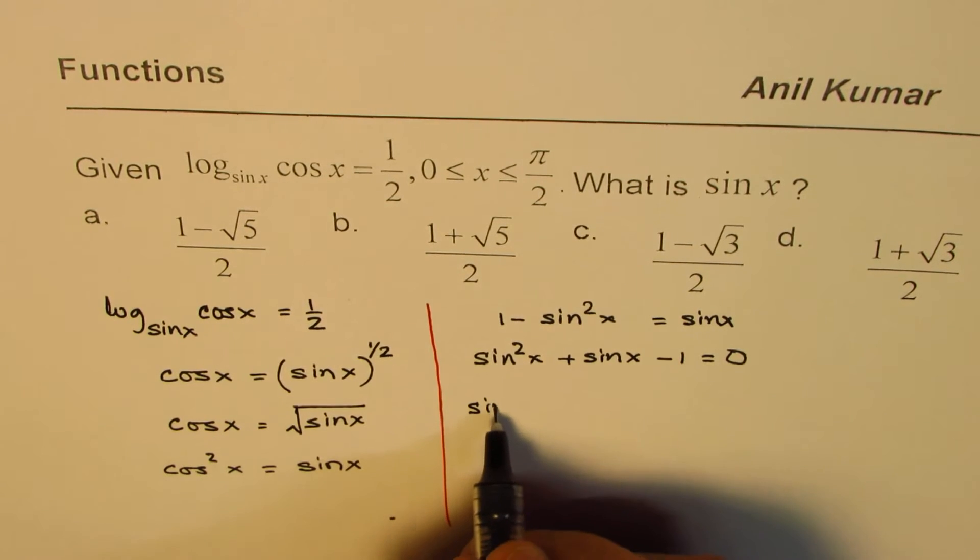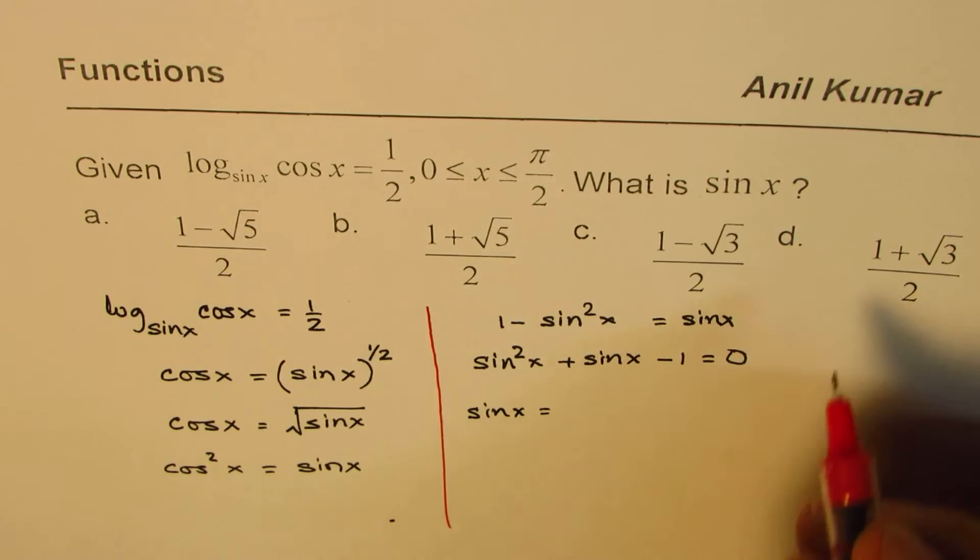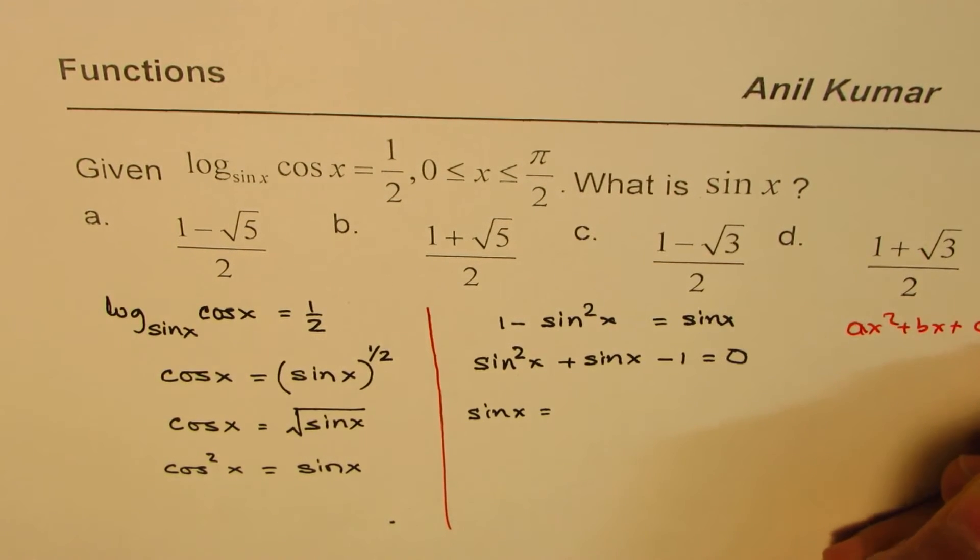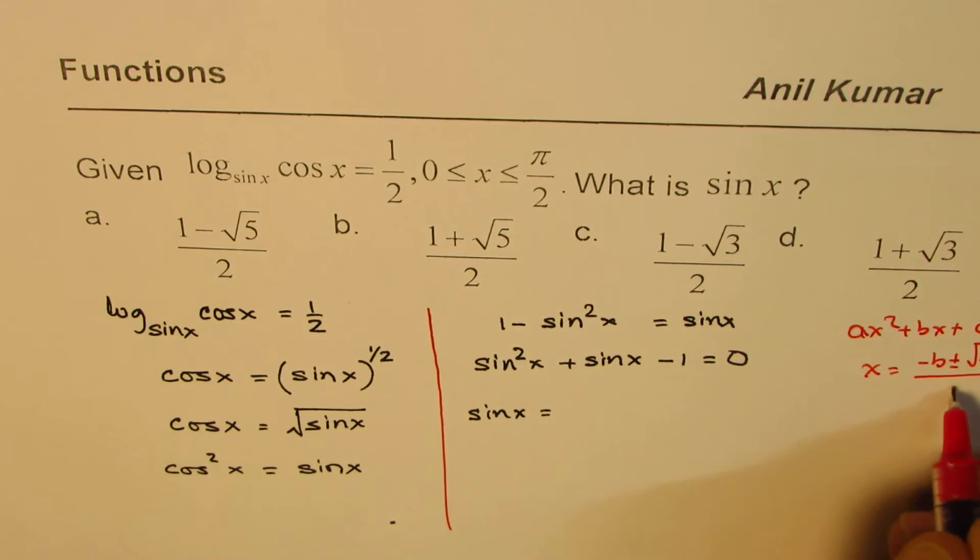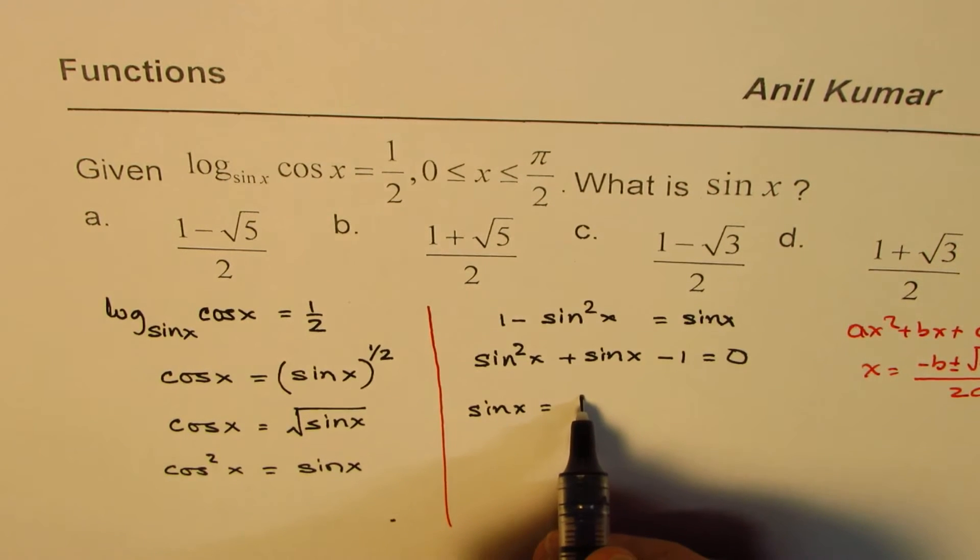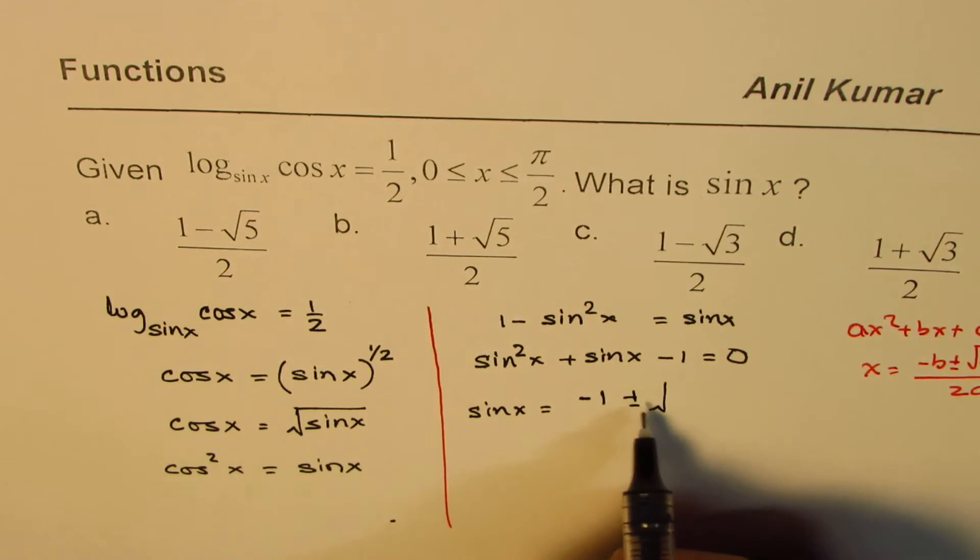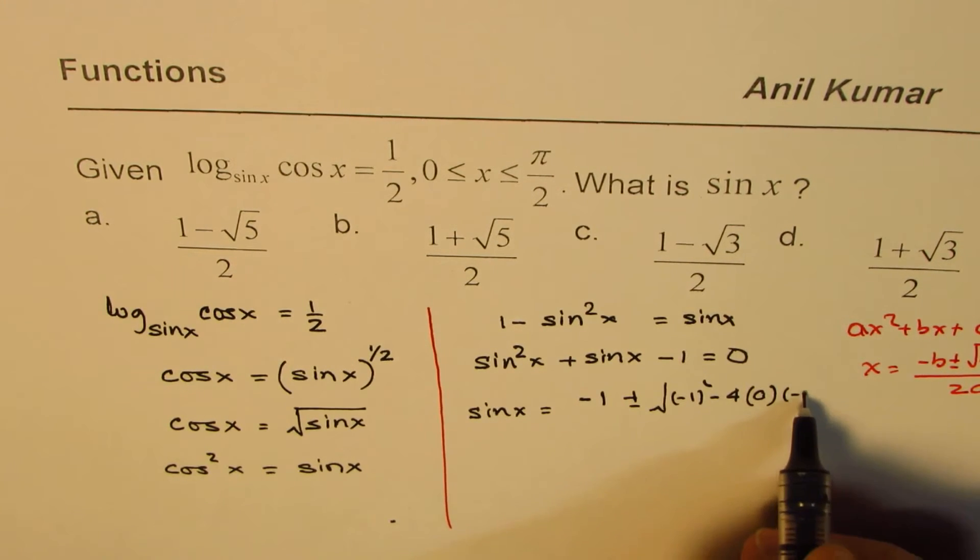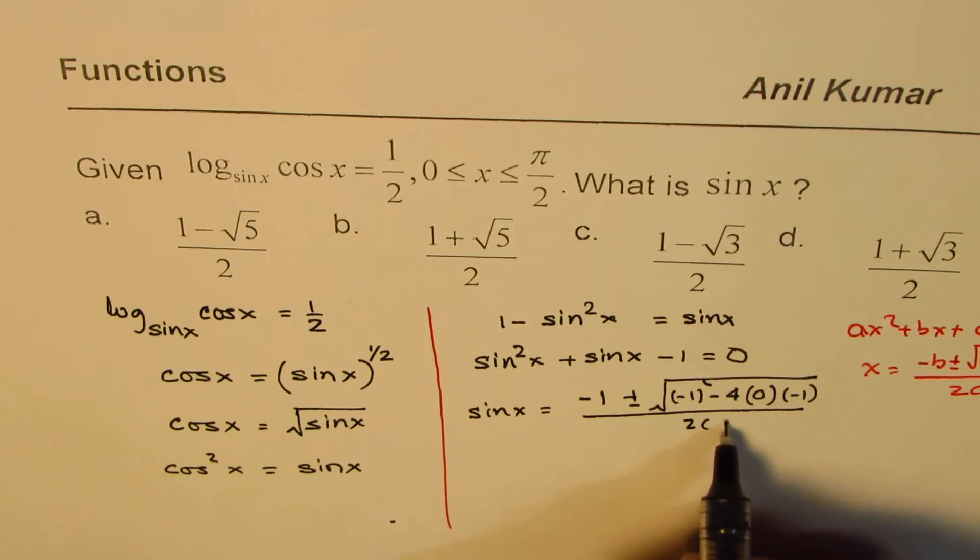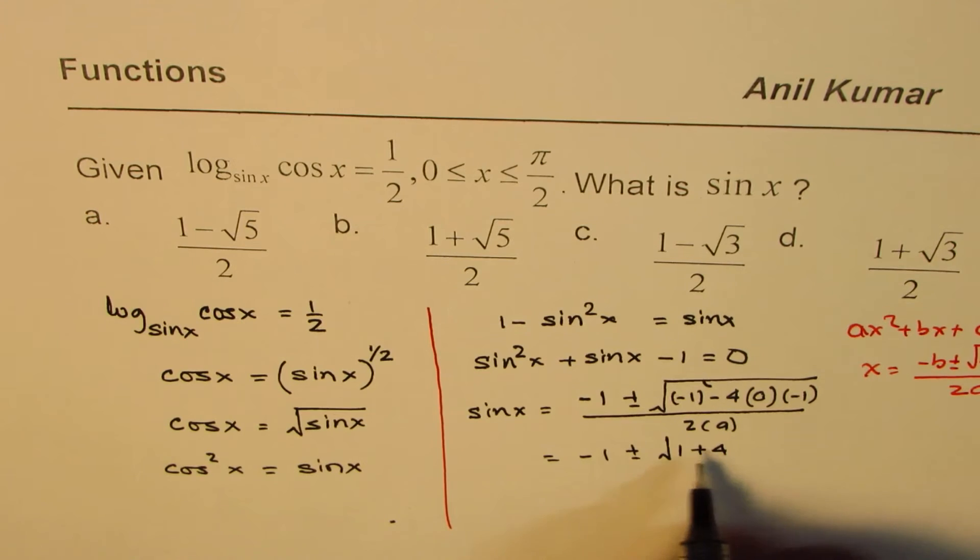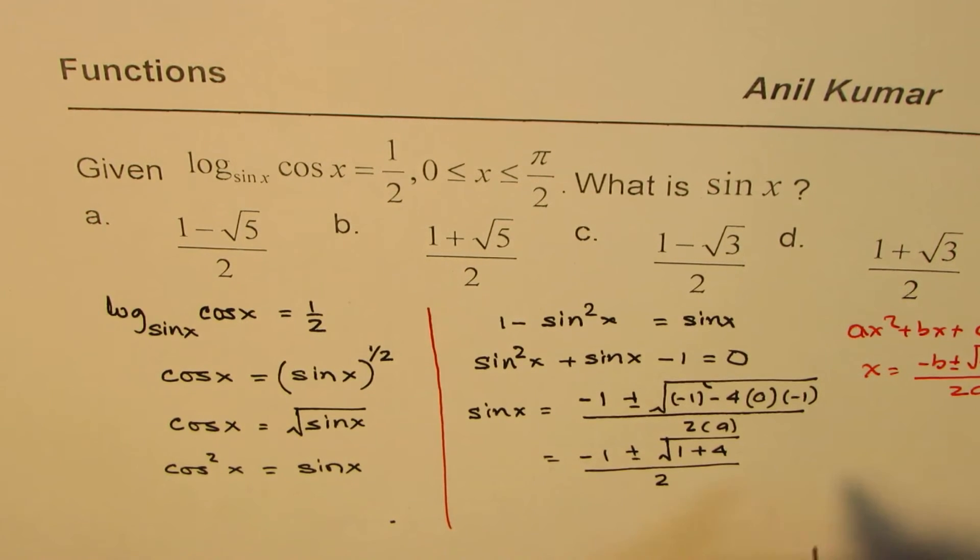Now that becomes a quadratic equation in sine x, so sine x equals—we're using the quadratic formula. If ax squared plus bx plus c equals 0, then x equals minus b plus or minus square root of b squared minus 4ac over 2a. So minus 1 plus or minus square root of 1 plus 4 divided by 2, which equals minus 1 plus or minus square root of 5 over 2.